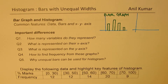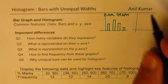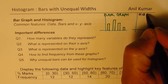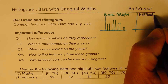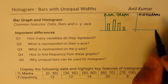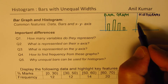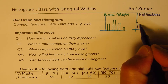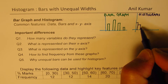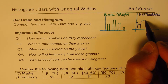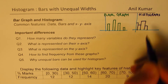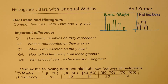On the other hand, if we have these bars joined together, we call them histograms. In histograms we like to make bars without any gap — kind of like this. That becomes a histogram.